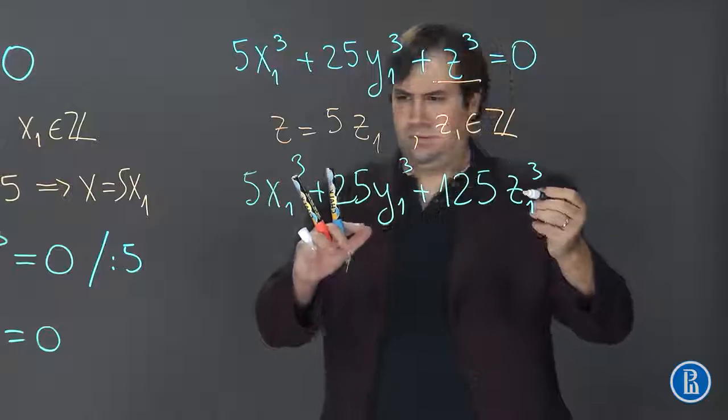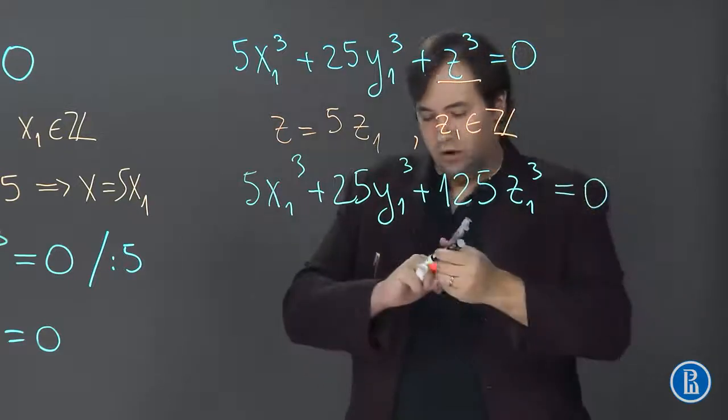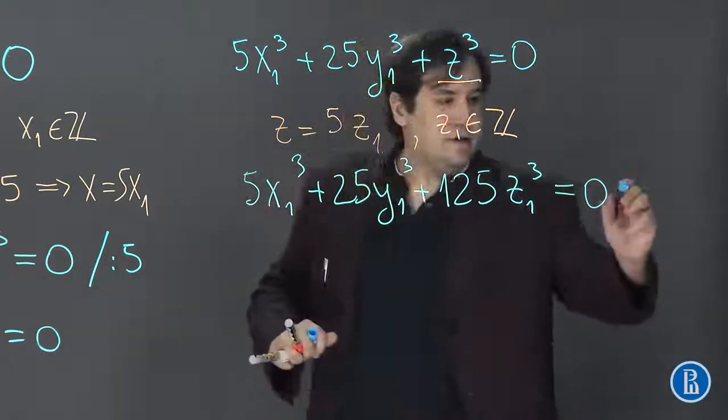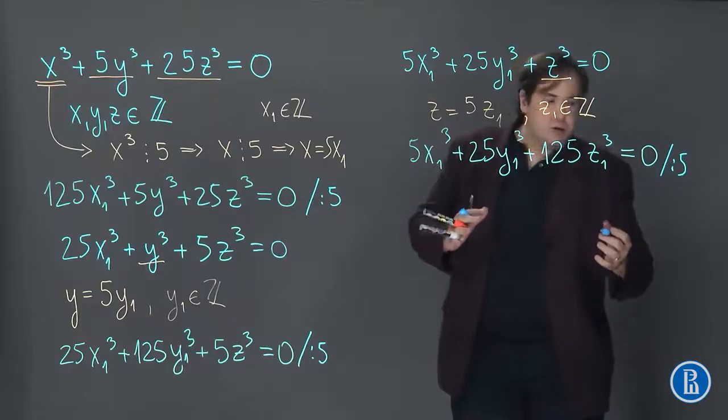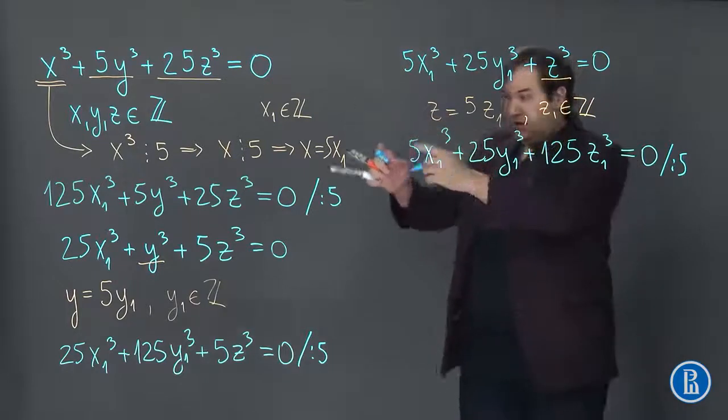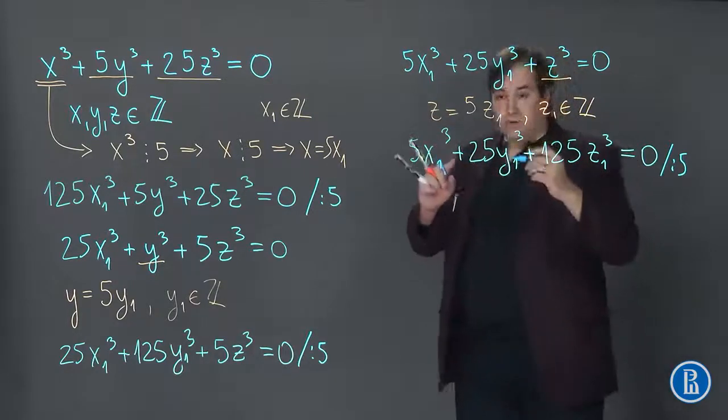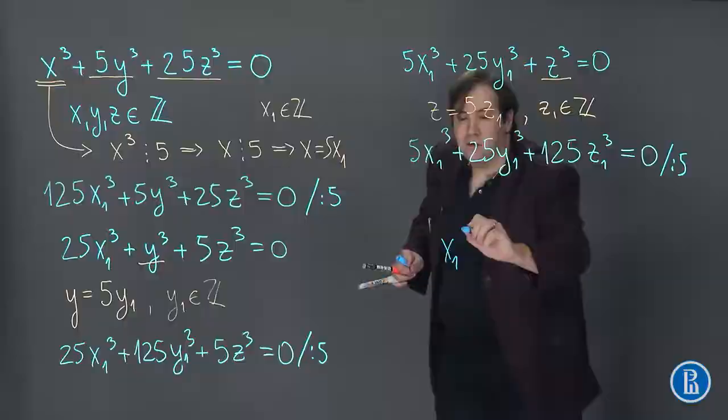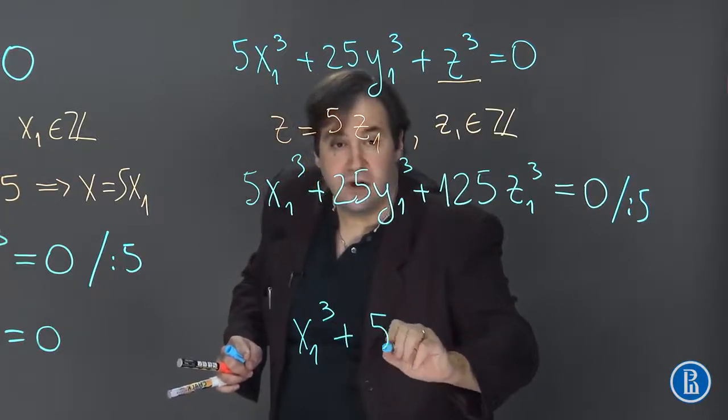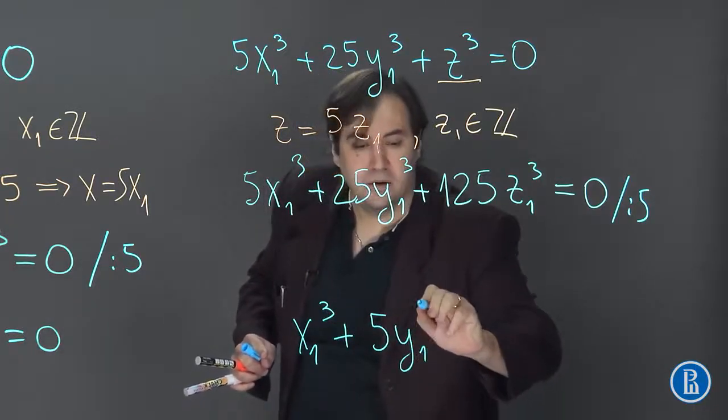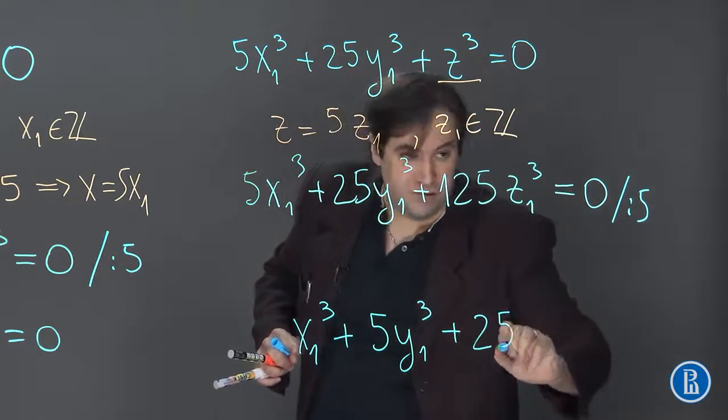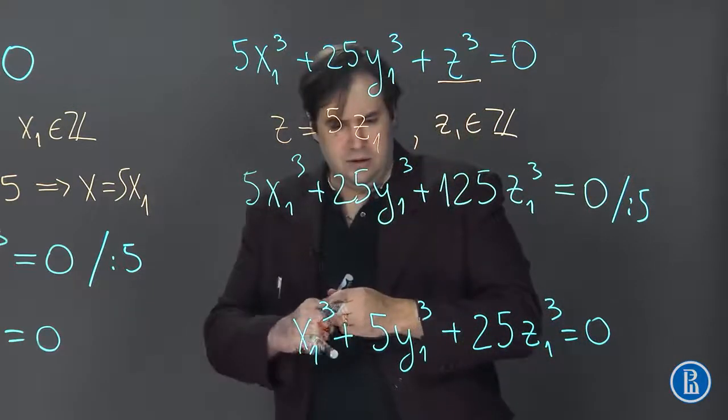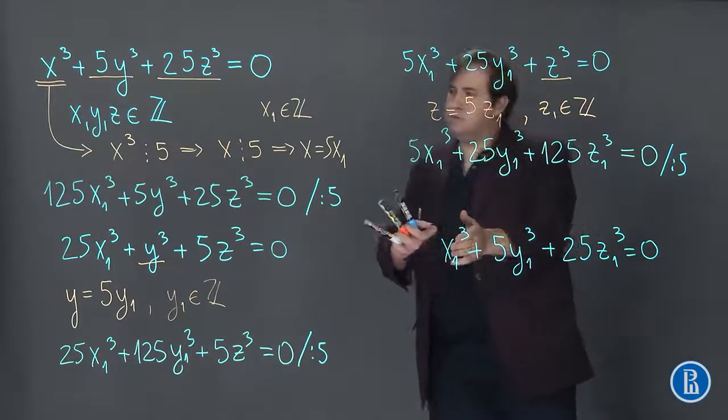5x₁³ plus 25y₁³ plus 125 which is 5³ times z₁³. We understand that z₁ is an integer. This should be equal to 0, and all coefficients are divisible by 5 so we can divide once again this equation by 5. The new equation, 4th in a row.